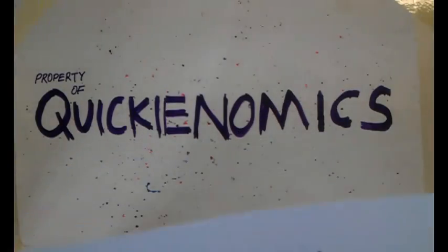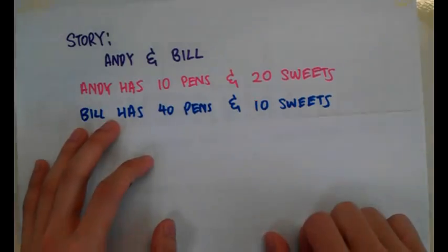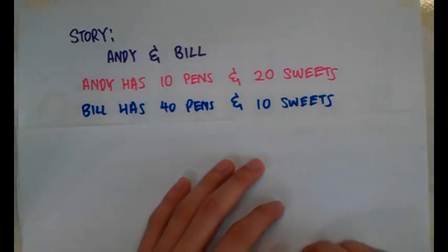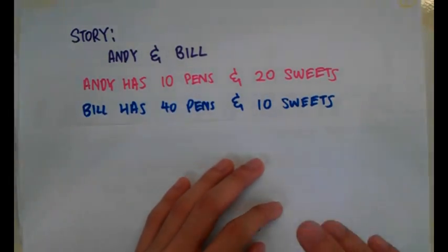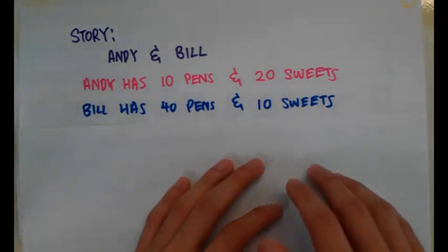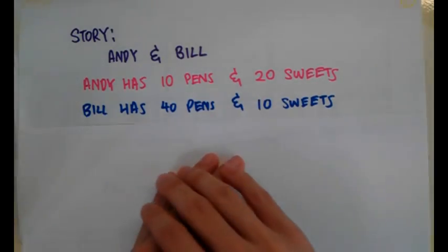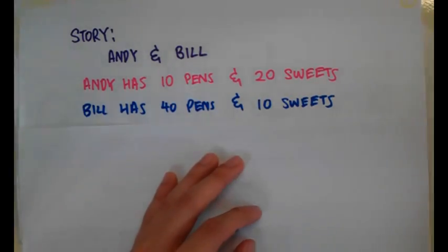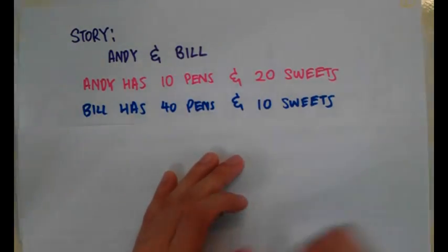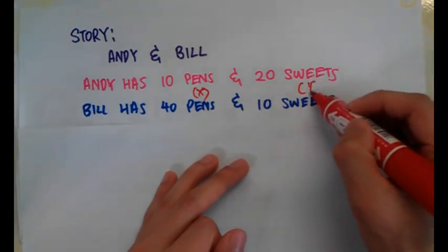I think the best way to teach you this is through a story. We have got two individuals — they are Andy and Bill. Andy and Bill each have two kinds of goods. Andy has got 10 pans and 20 sweets, and Bill has got 40 pans and 10 sweets. We're going to let the pans be X and the sweets be Y.